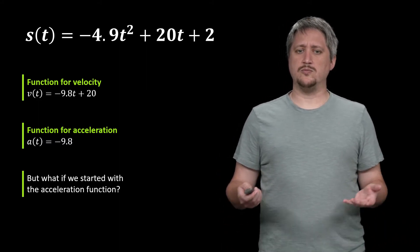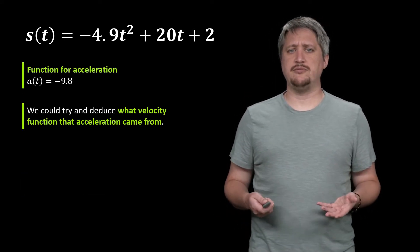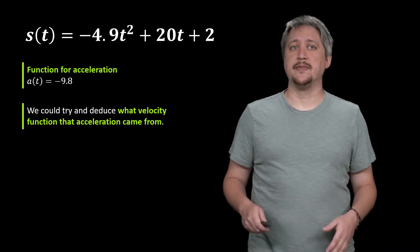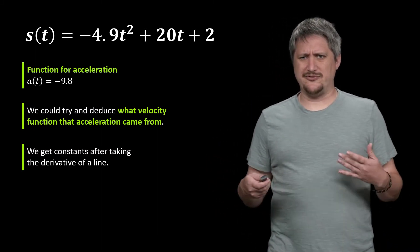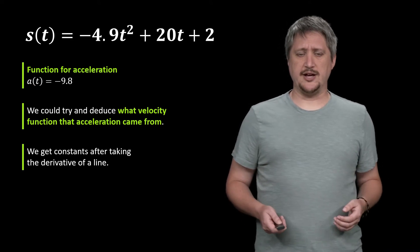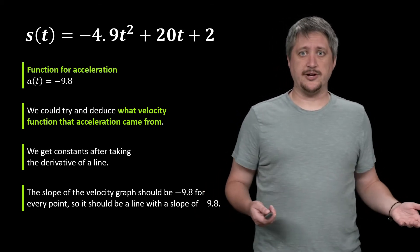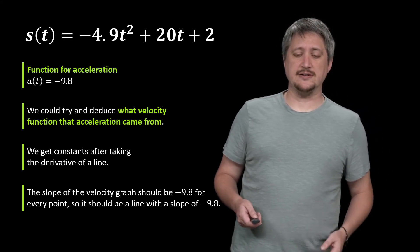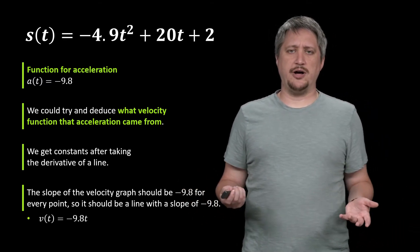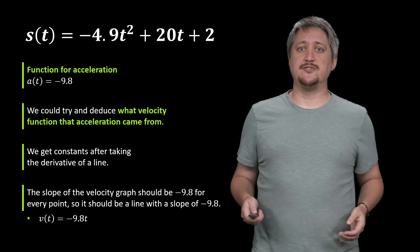But what if we started with the acceleration function rather than the position function? If we start with a of t we could try to deduce what the velocity function could have been that gave us that acceleration function. We get constants after we take the derivative of a line, and here we have a constant negative 9.8, so the slope of that velocity graph should be negative 9.8 for every point. So it should be a line with a slope of negative 9.8. So a worthwhile option here, v of t is negative 9.8t. It's a line, has a slope of negative 9.8 everywhere, seems like it checks all the boxes.